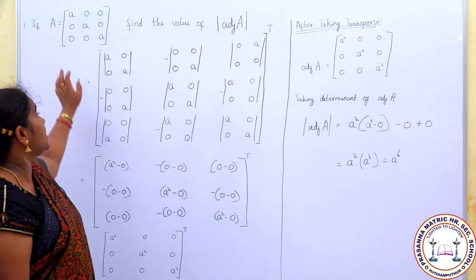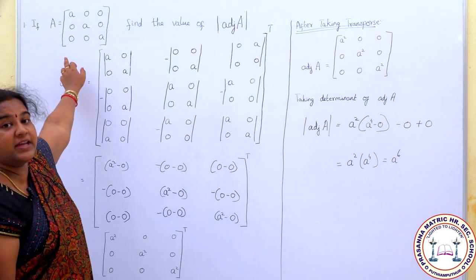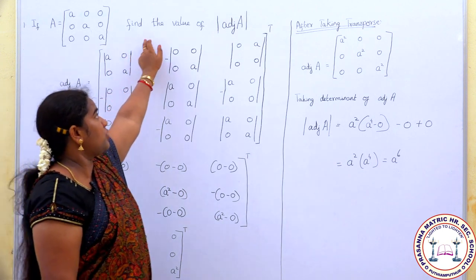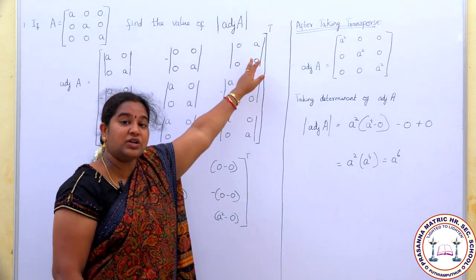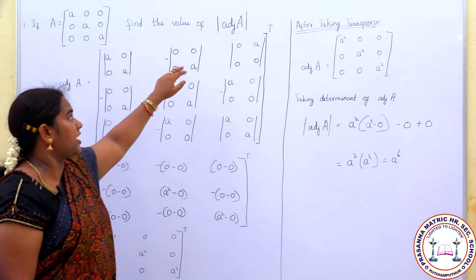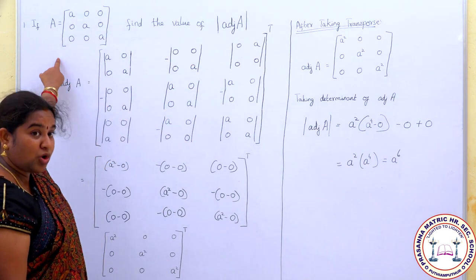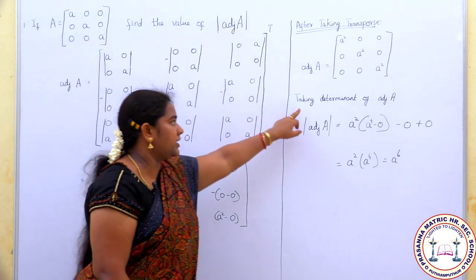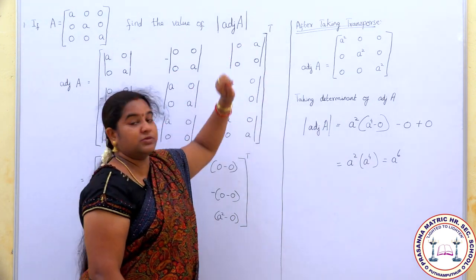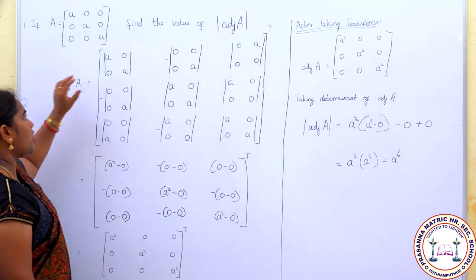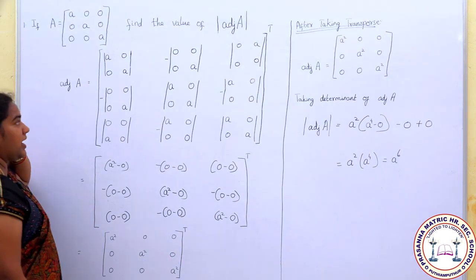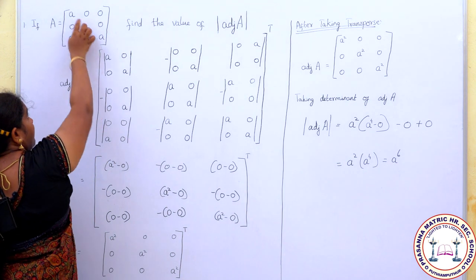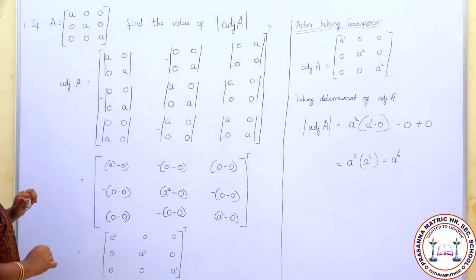The question given here is: if A is a 3×3 matrix, find the value of the determinant of adj(A). To solve this, we need to find the adjoint of the given matrix and then find the determinant of that adjoint matrix. The first step to finding the adjoint is to write the cofactors of every element of matrix A.